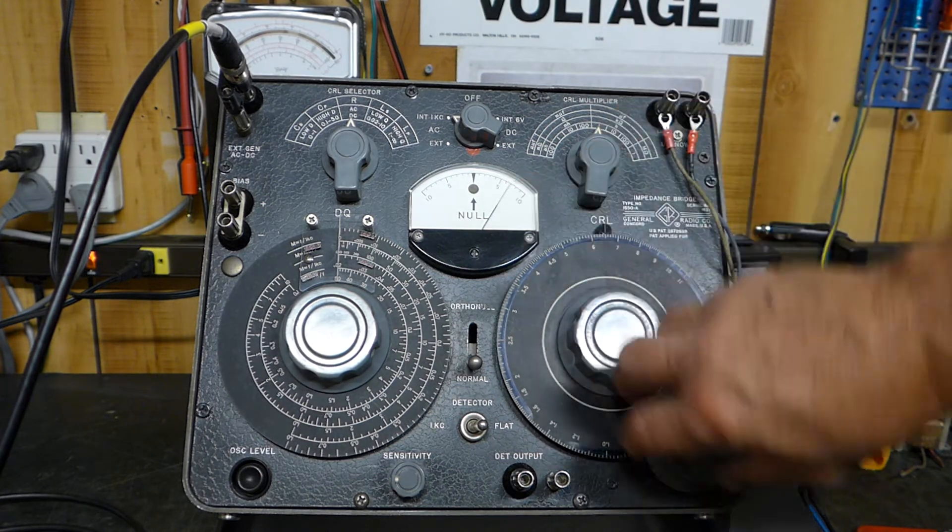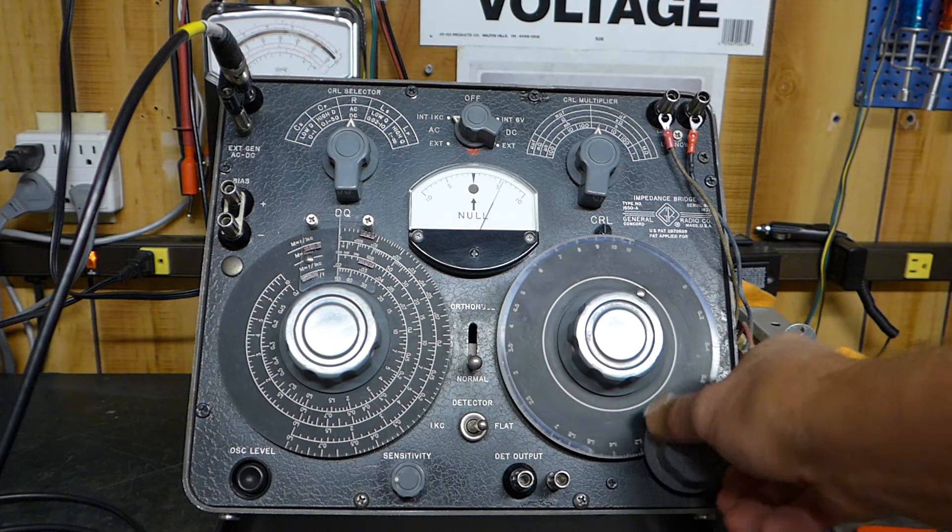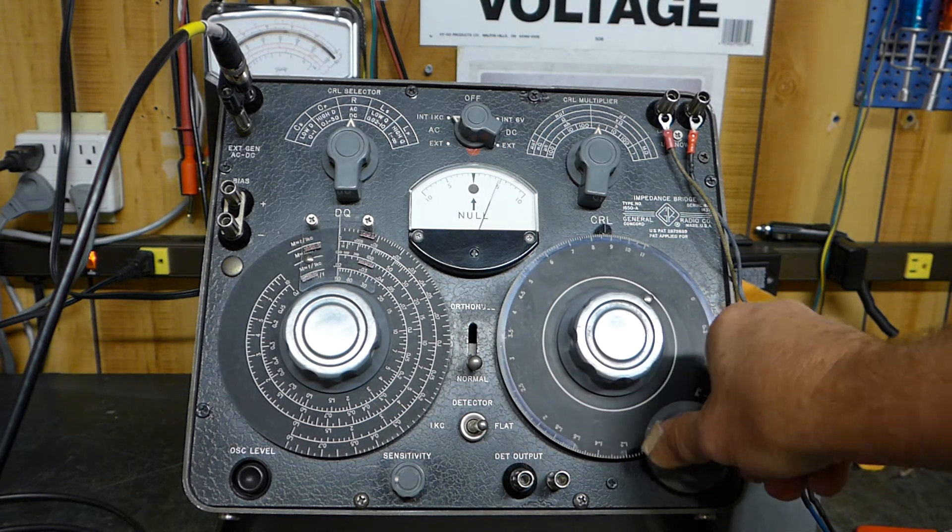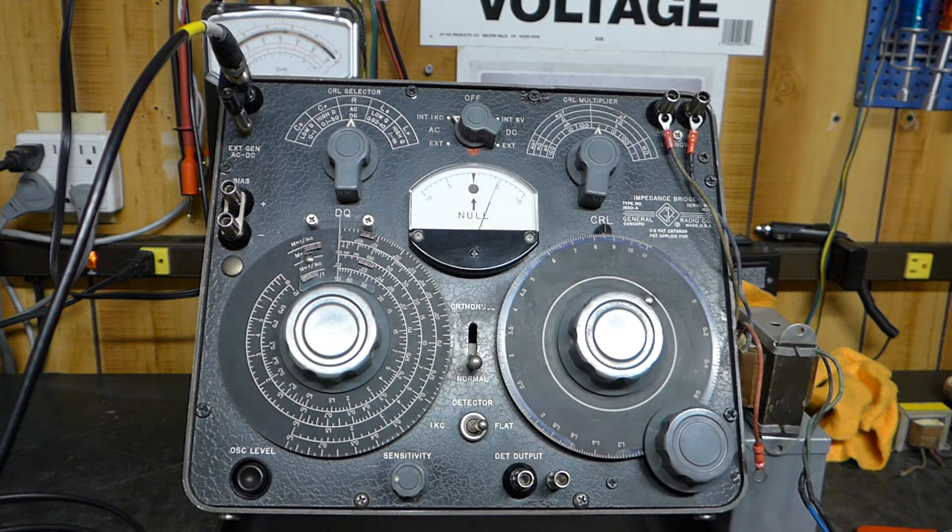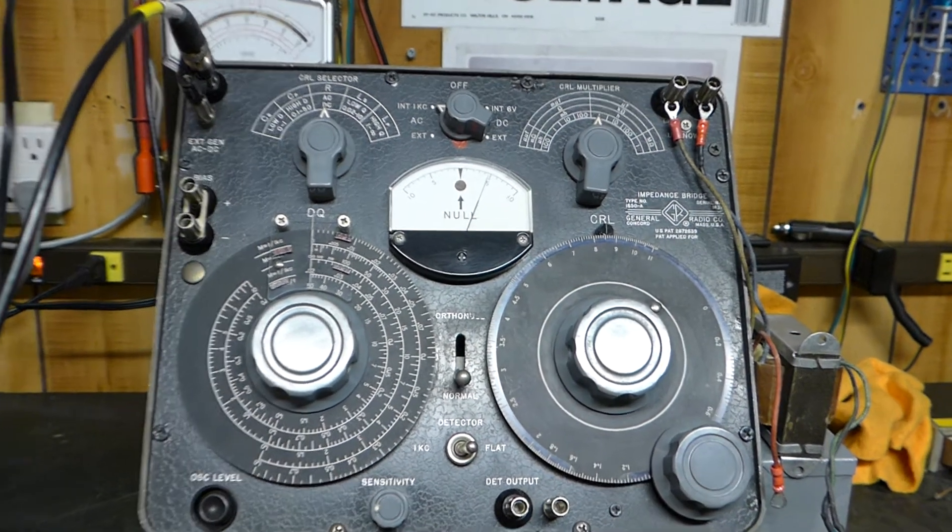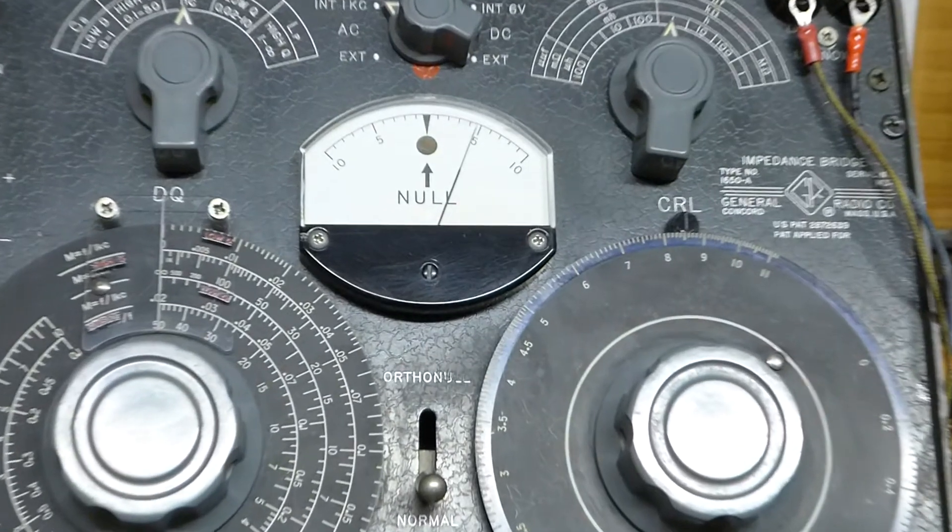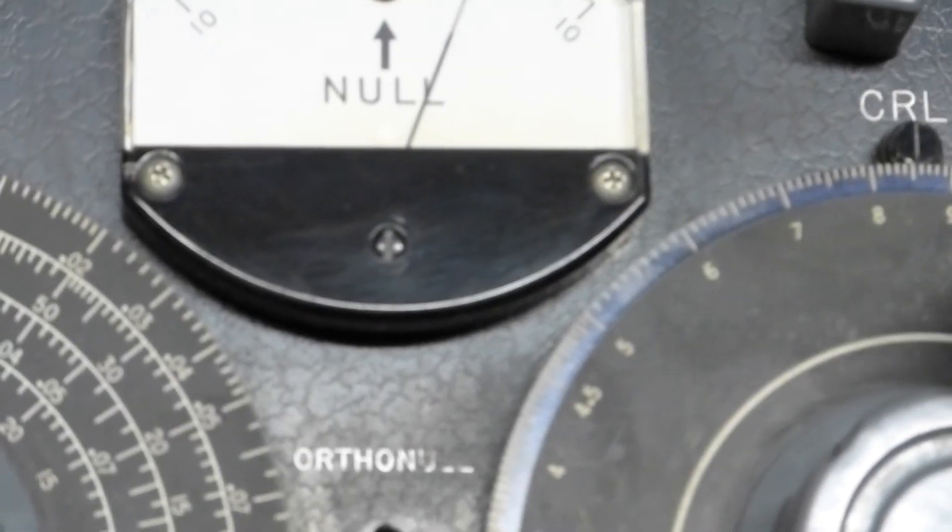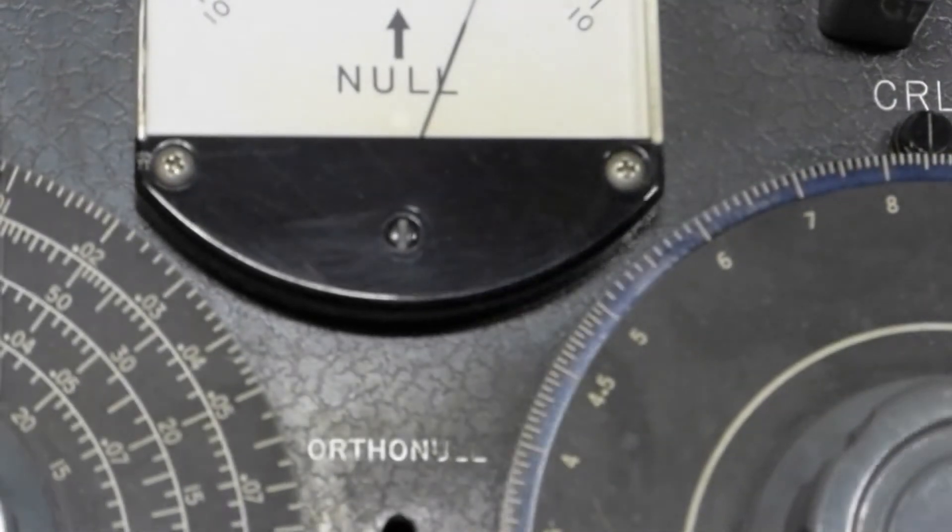Okay, now watch as I approach whatever number I'm approaching. Watch the null right here as it nulls right there, and as we rock back and forth. And then we read this number right here. Let's zoom in just a little bit at the null, and the number is about 8,500.